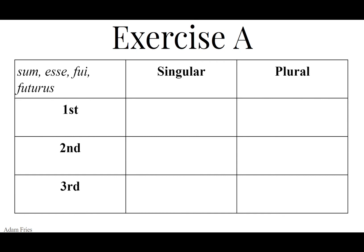And finally: sum, esse, fui, futurus. Even if the verb is irregular, it's only irregular in the present, the imperfect, and the future tenses. If you go to the third principal part fui, chop off the I — fu is going to be the perfect stem for all of these. It's totally regular, even though it's an irregular verb everywhere else, just like every other verb in the perfect, pluperfect, and future perfect tenses. So: fui, fuisti, fuit, fuimus, fuistis, fuerunt.